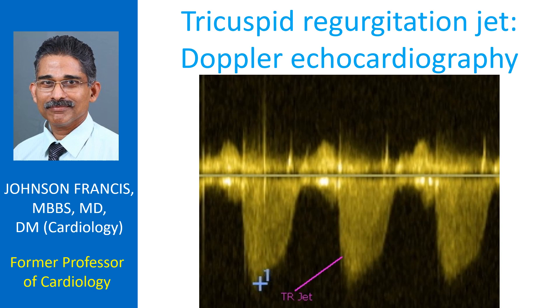Initially color Doppler imaging is done and the direction of the jet identified. Then the cursor is aligned along the direction of the TR jet and continuous wave Doppler signals obtained.